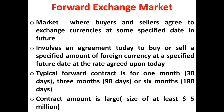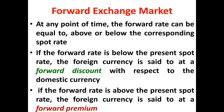The equilibrium in the forward rate is determined at the intersection of market demand and market supply of foreign exchange for future delivery. At any point in time, the forward rate can be equal to, above, or below the corresponding spot rate. That means even though the spot rate and forward rate move more or less together, there can be differences. If the forward rate is below the present spot rate, the foreign currency is said to be sold at a forward discount with respect to domestic currency.